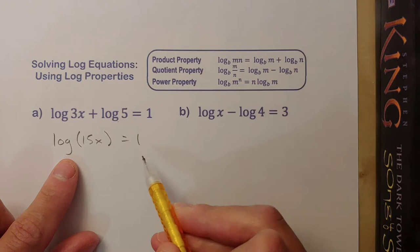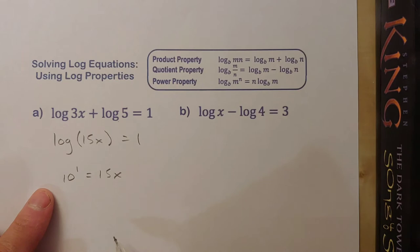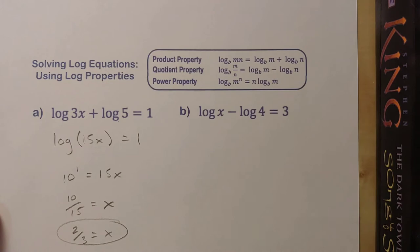So using that product property, I've combined these logs into one single log. Now I can convert this into exponential form. This is base 10, so 10 to the power of 1 equals 15x. Well, 10 to the 1 is just 10, so dividing both sides by 15, I get 10/15 equals x, or of course 2/3. Isn't that nice?